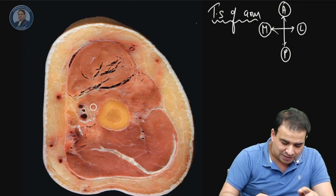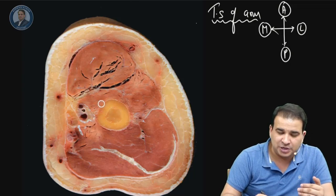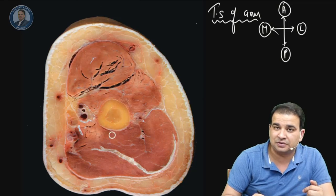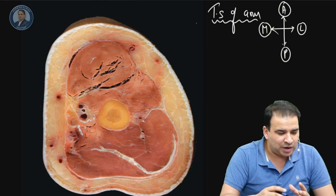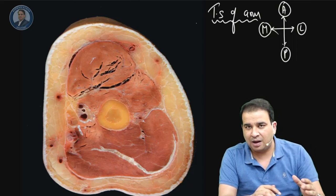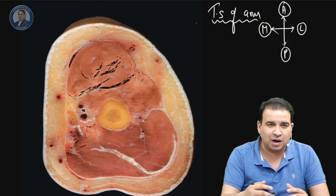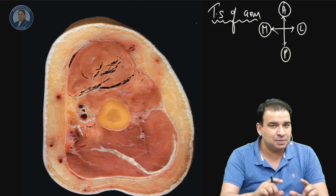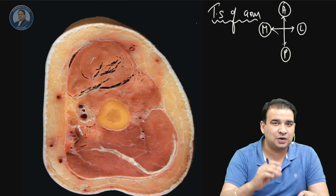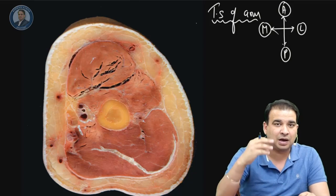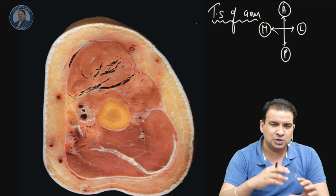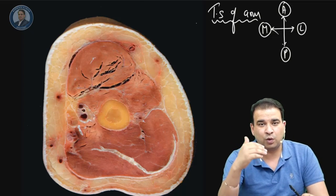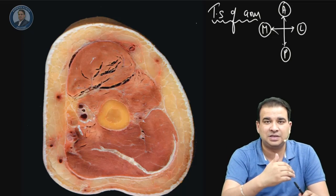You can see a muscle originating from the anterior surface and one from the posterior surface. When looking at a transverse section — be it arm, forearm, or thigh — always look at the bone first. The bone will tell you whether the section is from the upper or lower half, and from that you can anticipate which muscles will or won't be visible.